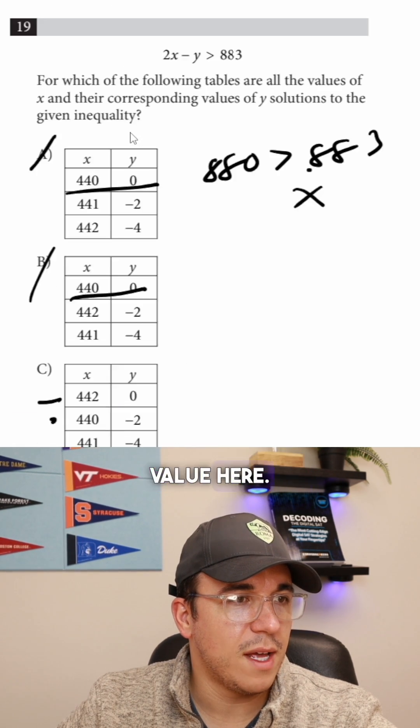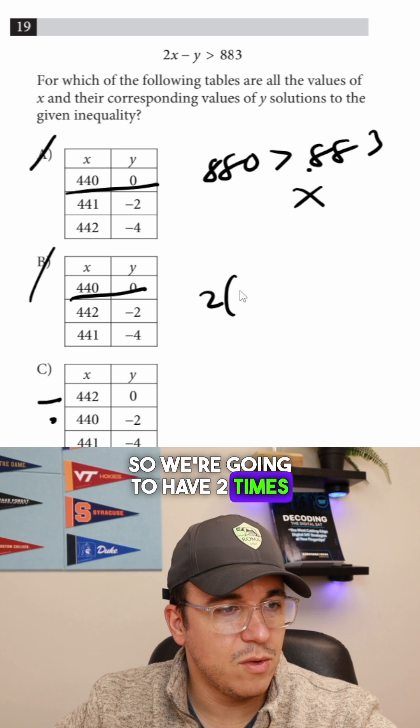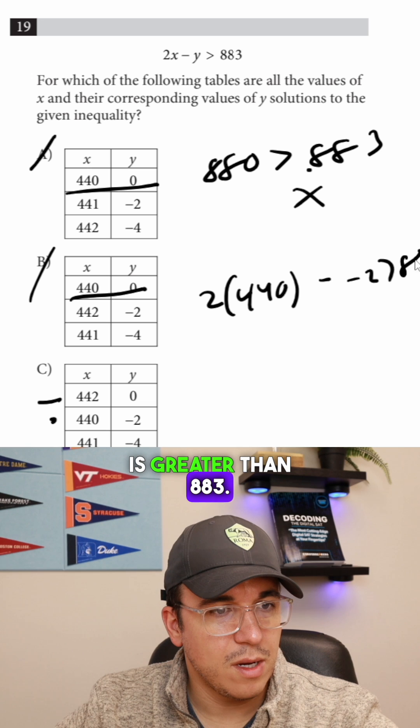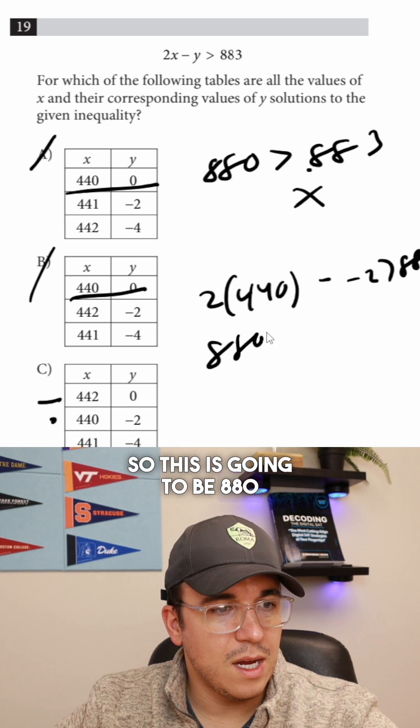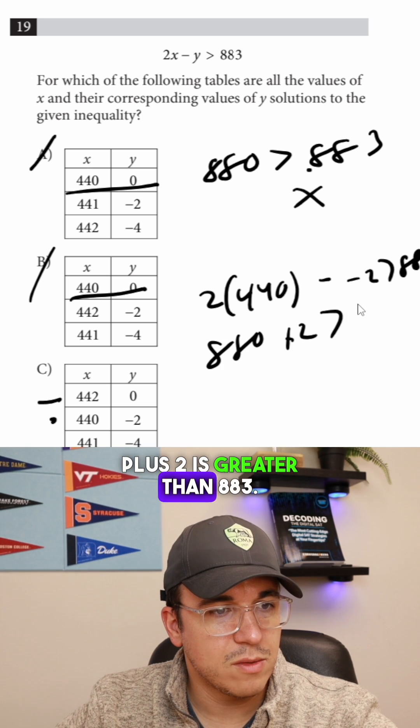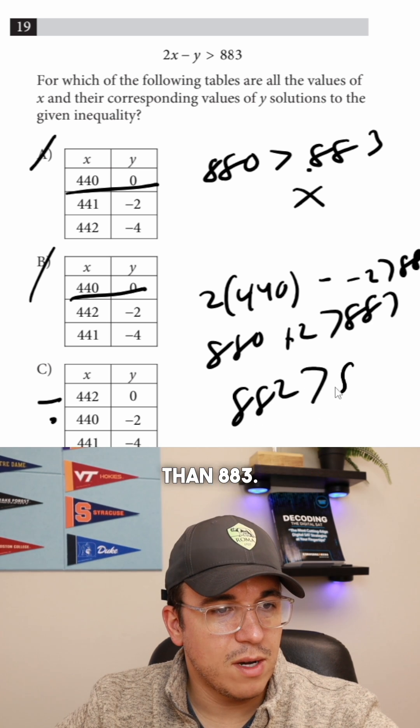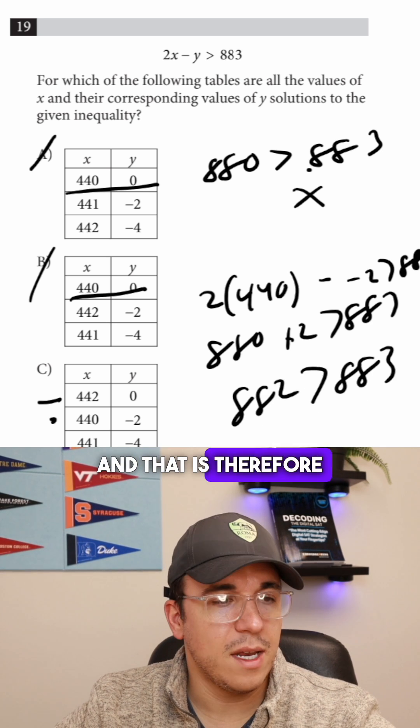So we might want to check this value here. We're going to have 2 times 440 minus negative 2 is greater than 883. So this would be 880 plus 2 is greater than 883, and that's going to be 882 is greater than 883, and that is therefore wrong.